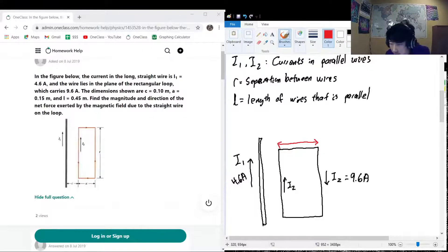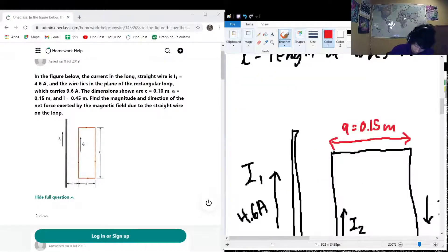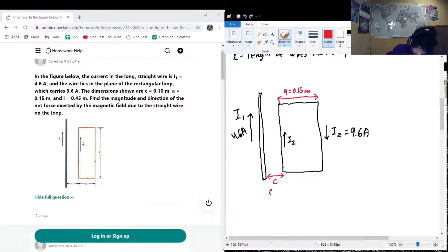We have to have some distance values, let's put them in red. So our distance, this distance here, that's going to be distance a, and a corresponds to 0.15 meters, a equals 0.15 meters. The separation here, that is c, and c corresponds to 0.10 meters. And this distance, pretty much the height of the rectangle, that is given as l, which is 0.45 meters.